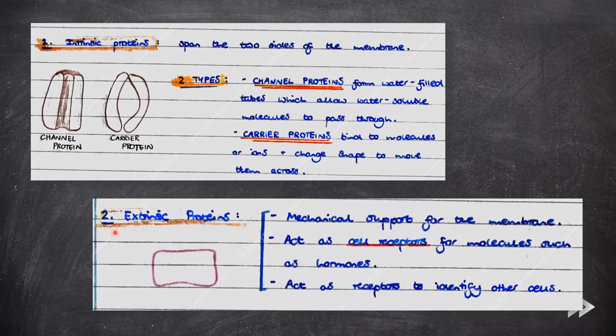Next, we have extrinsic proteins, X coming from the Latin for outside. So they're found on the outside of the phospholipid bilayer. They provide mechanical support for the membrane and also act as cell receptors for molecules such as hormones. And they also act as receptors to identify other cells.